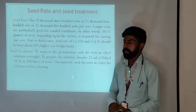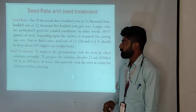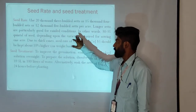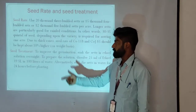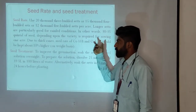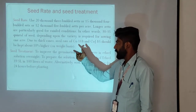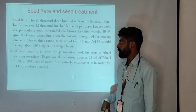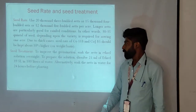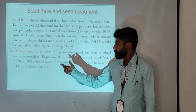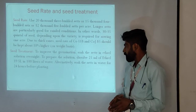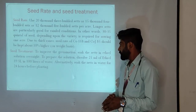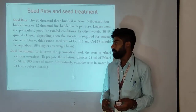Seed rate: use 20,300 sets, or 15,400 sets, or 12,500 sets per acre. Longer sets are particularly good for rainfed conditions. In other words, 30 to 35 quintals of seed cane, depending upon the variety, is required for sowing one acre. For ratoon crop, the seed rate of CO-118 and CO-85 should be kept about 10% higher than normal. For seed treatment, to improve germination, soak the seed in ethrel solution overnight. To prepare the solution, dissolve 25 ml of ethrel 39 SL in 100 liters of water. Alternatively, soak the seed cane in water for 24 hours before planting.